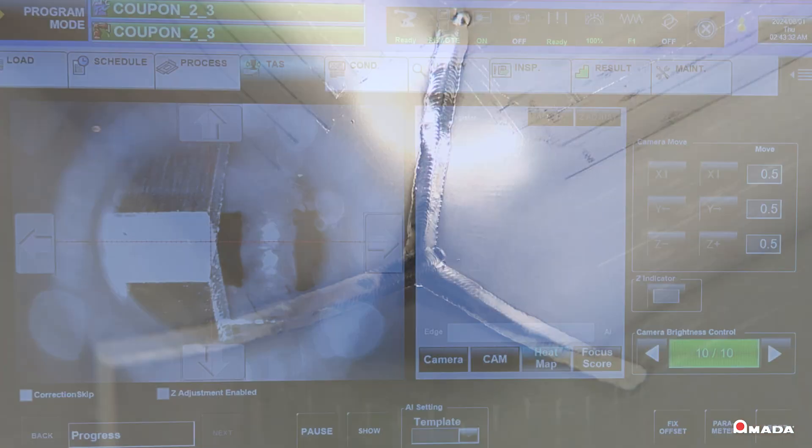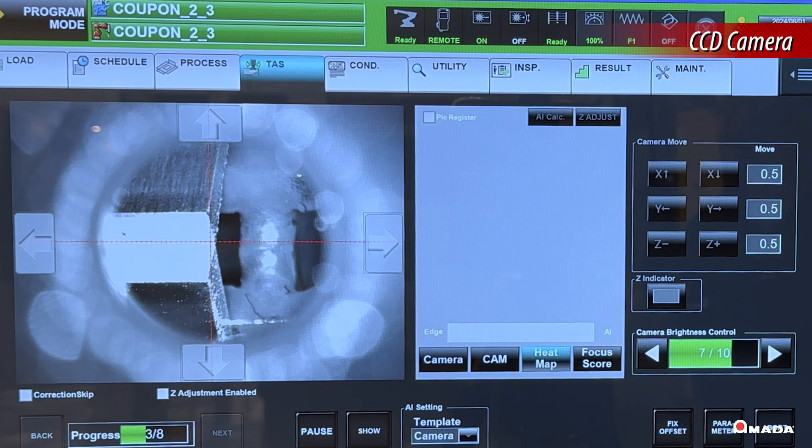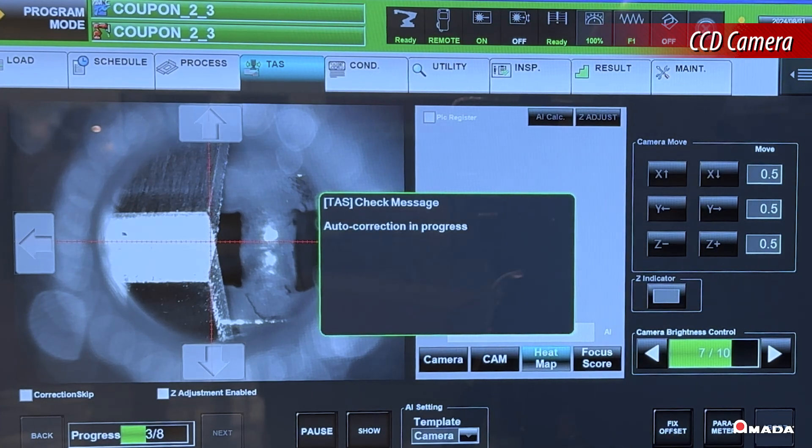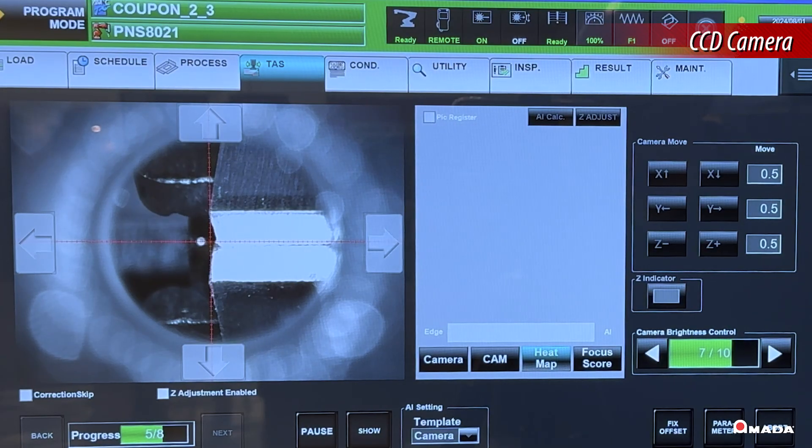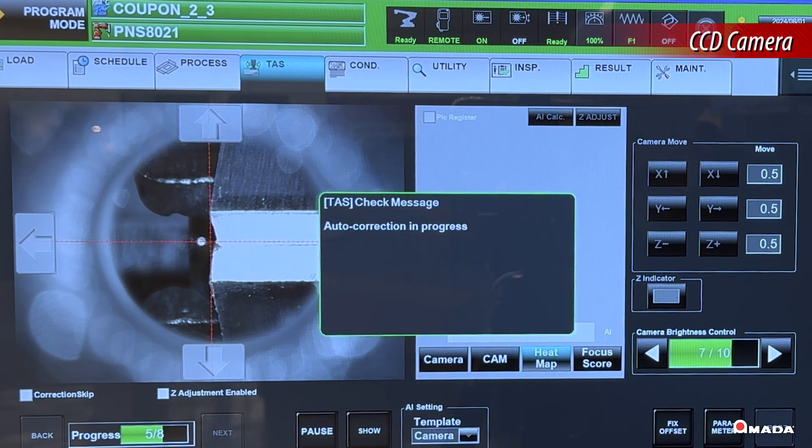By using a CCD camera, new target points are selected on the part, which instantly teach the robot the correct path. All compensation points are stored with the part program for future production.